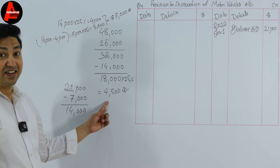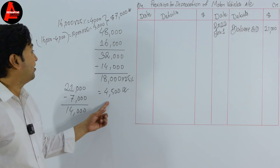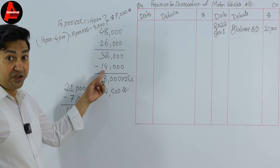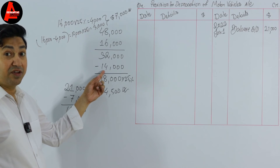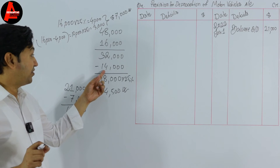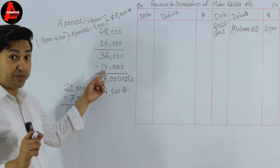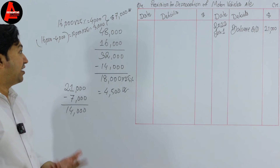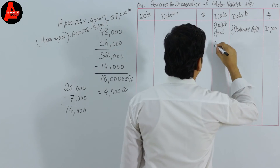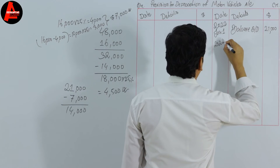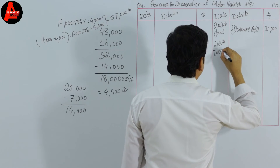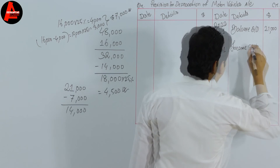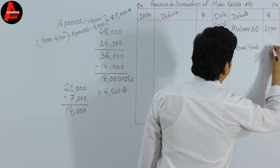This current year depreciation of $4,500 is the correct figure. Many students mistakenly subtract the full $21,000 directly, which is incorrect because you must first remove the disposed asset's depreciation from the provision. Now, on the credit side, we write: 31st December 2022 — Income Statement — $4,500.